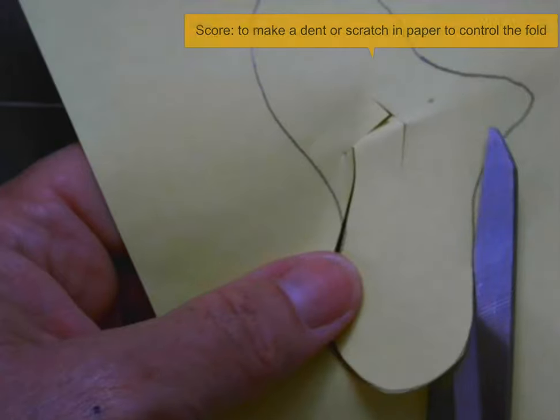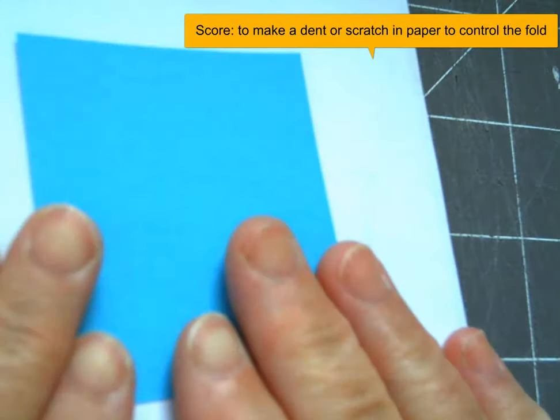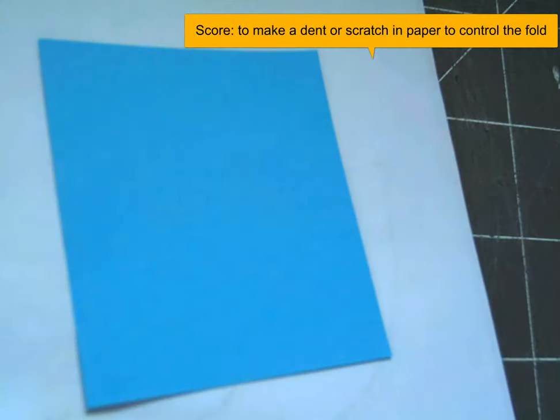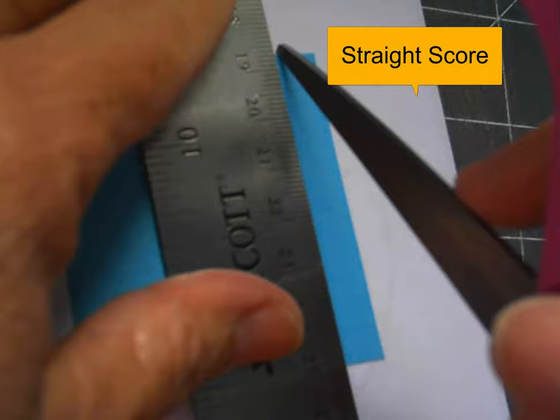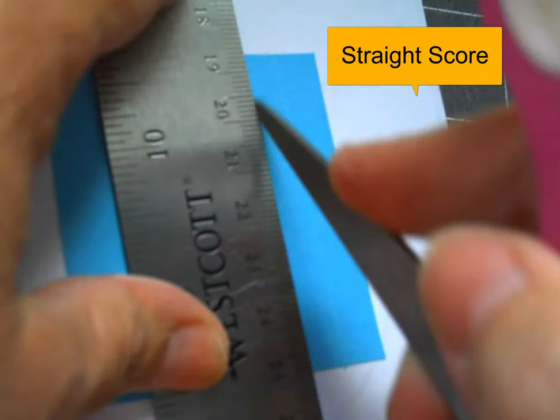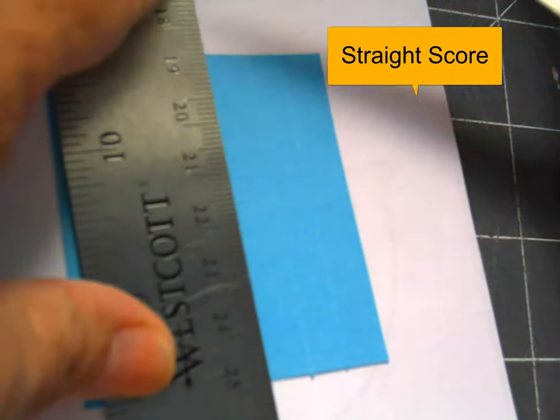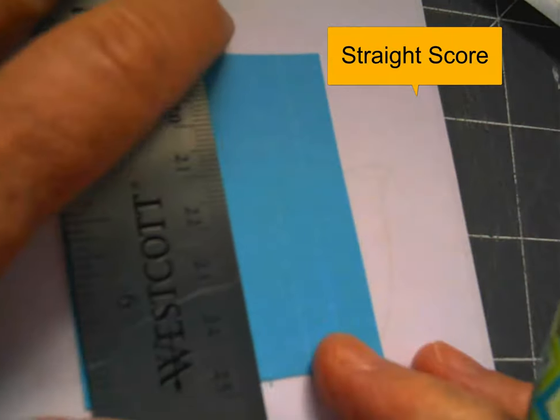The first technique we're going to do is scoring. To score means to make a dent or a scratch in the paper to control the fold. You can score with any number of tools, anything that's sharp or will emboss the paper. Here I'm scoring with scissors and a ruler because I want to make straight score lines for folding.